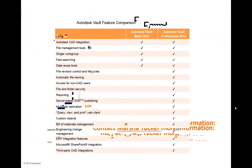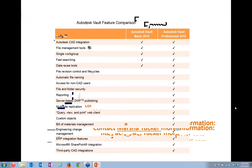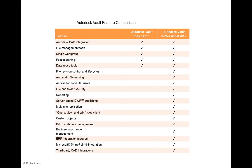This is the start of what will be a series on Vault Professional topics. Due to time constraints, we weren't able to do a deeper dive into all of the different functionality and features. In future webinars, we'll be breaking this out into other topics, really highlighting things like lifecycle definitions and categories, as well as new features available for reporting and bill of materials management.